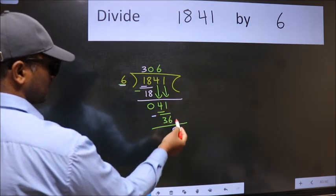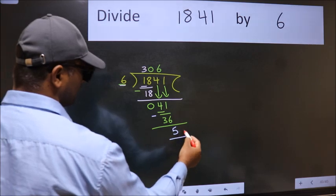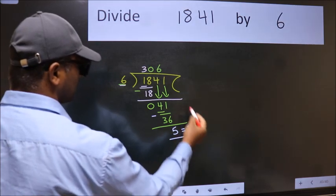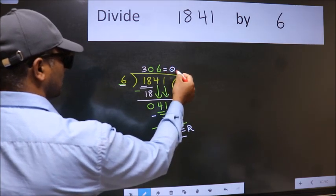No more numbers to bring it down. So we stop here. This is our remainder and this is our quotient.